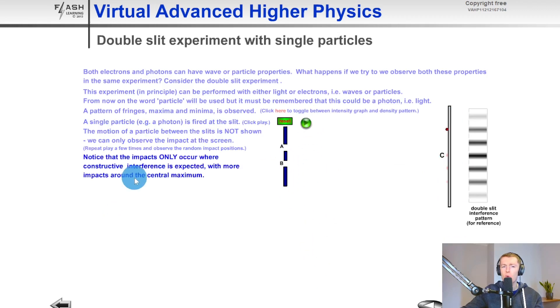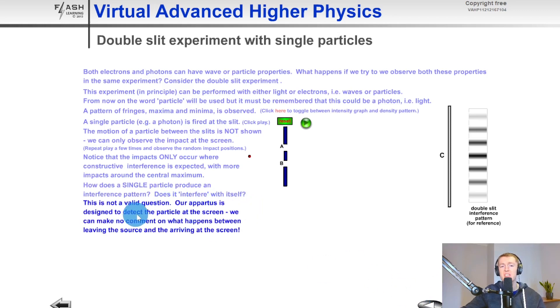It then says notice that the impacts only occur where constructive interference is expected with more impacts around the central maximum. And then there's a question posed here which is how does a single particle produce an interference pattern? Does it interfere with itself? Well the answer to this is that this is not a valid question. Our apparatus is designed to detect the particle at the screen. We can make no comment on what happens between leaving the source and arriving at the screen.